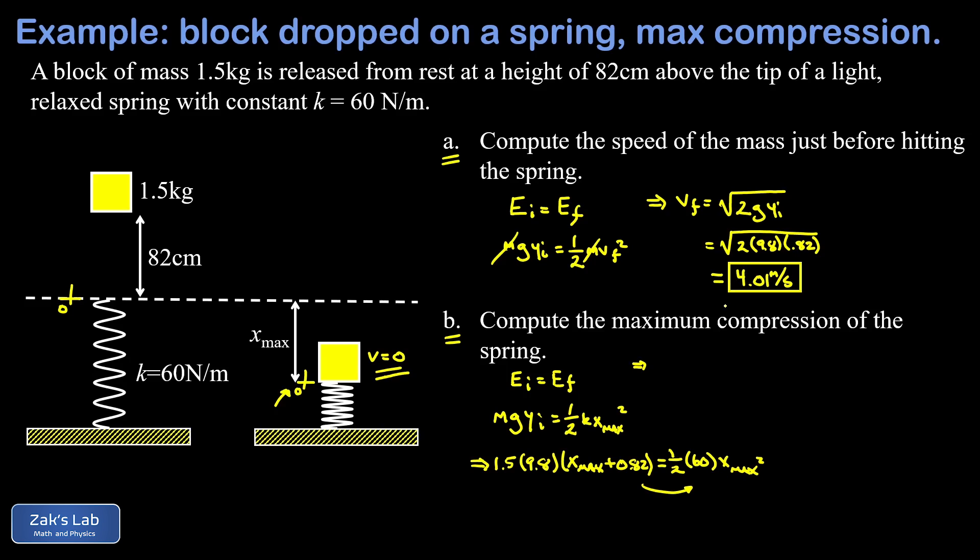So I end up with 30 x max squared—that's just one half of 60—and then I'm going to take my linear term, 1.5 times 9.8 times x max, and subtract that over to the right hand side, and this gives me negative 14.7 x max.